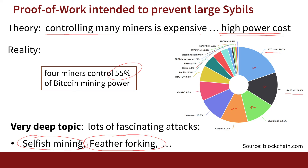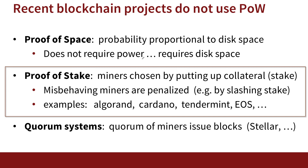Because of the energy expenditure with proof of work and the fact that it doesn't quite lead to decentralization, more modern projects are moving away from proof of work, and eventually proof of work might be phased out. One alternative is proof of space, where instead of choosing a miner proportional to computing power, we choose a miner proportional to how much disk space they have. Disks are energy-efficient, so it won't require a lot of power to compete — all you need is disk space, which you presumably already have. There's a blockchain being created that uses proof of space instead of proof of work.